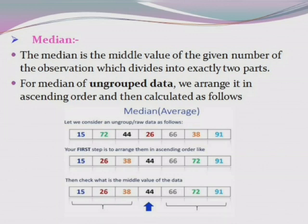The second measure of central tendency is median. The median is the middle value of the given number of observations, which divides the data into exactly two parts. For ungrouped data, we arrange the data in ascending order. For example, with data 15, 72, 44, 26, 66, 38, 91, after arranging in ascending order we get 15, 26, 38, 44, 66, 72, 91.